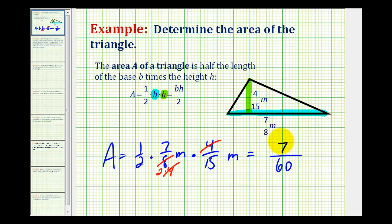So the area is 7 sixtieths, and the units for area are units squared, so in this case we have meters squared, and that's why I left the units in here. We can see that meters times meters would be meters squared.